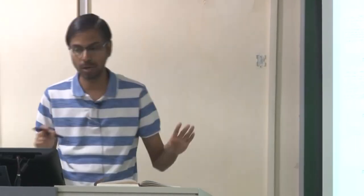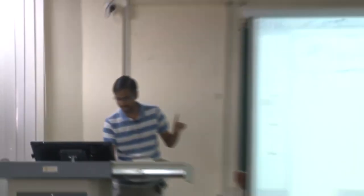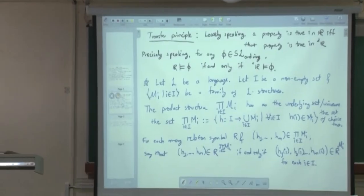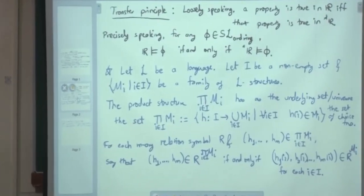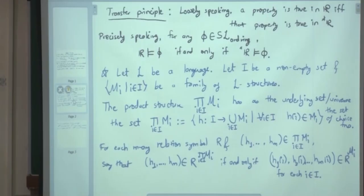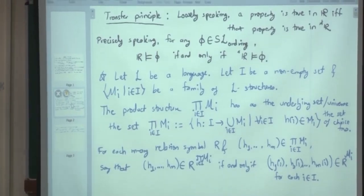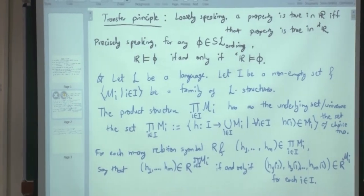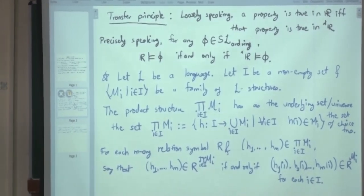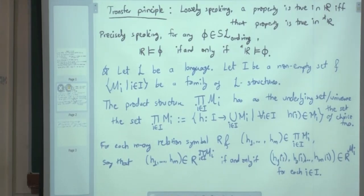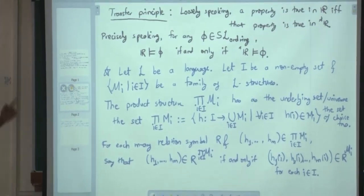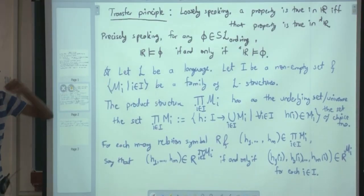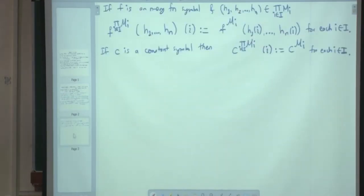Make sure you read this properly, because now I am going to introduce one more thing: an ultrafilter. So far, L was a language, I was a non-empty index set, and M_i was a family of L-structures. Now I am going to choose an ultrafilter on I — an ultrafilter in the power set of I — and define the ultraproduct of this family.